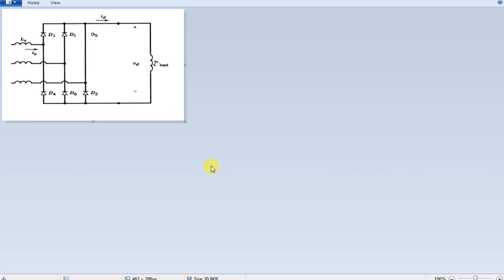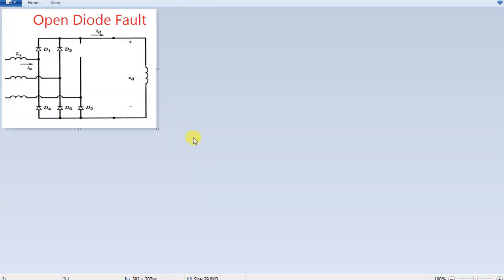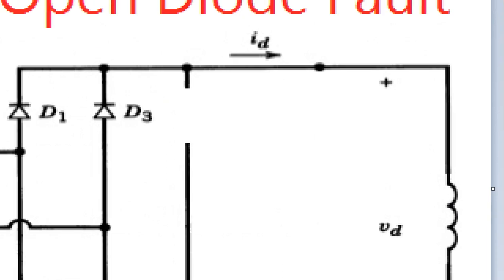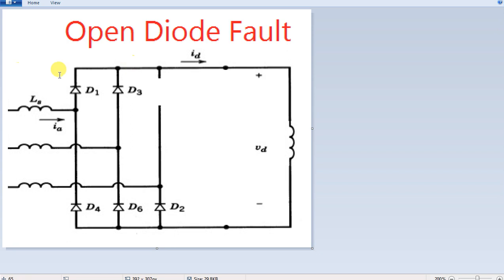So this is the short diode. And this is the open diode. What is an open diode? One diode is open — if it is not carrying the load current, the remaining diode will carry over. So this point is open and it will carry out the current.